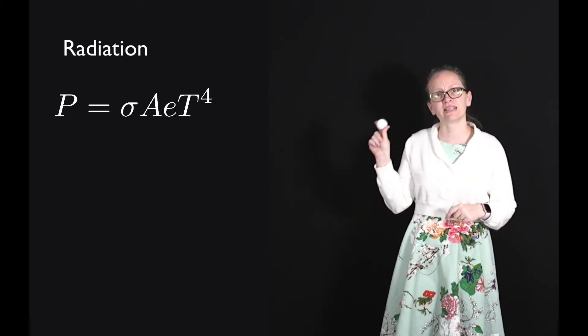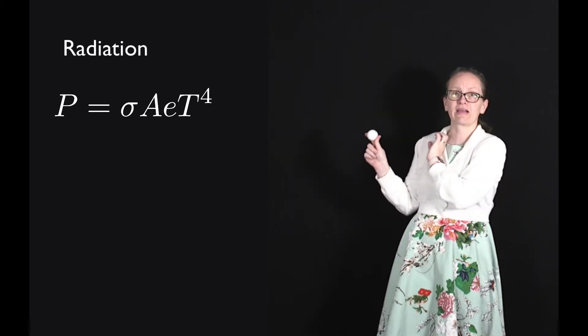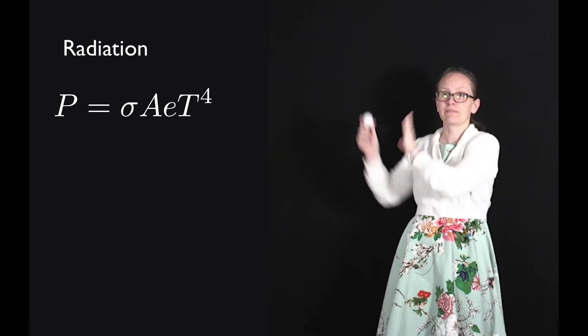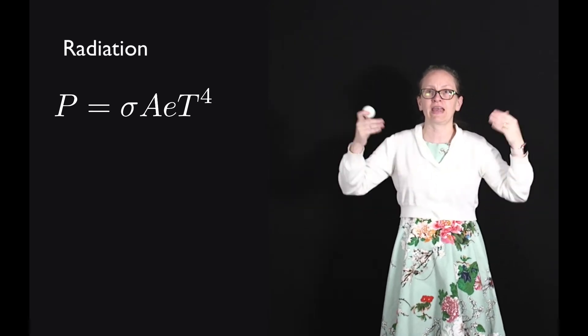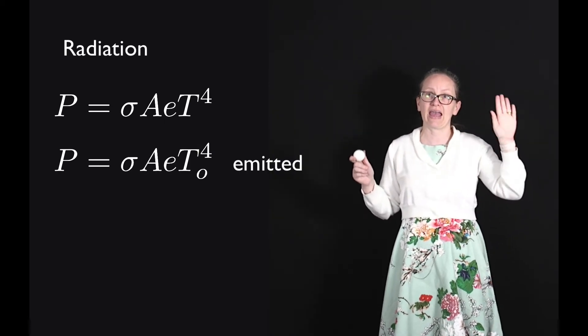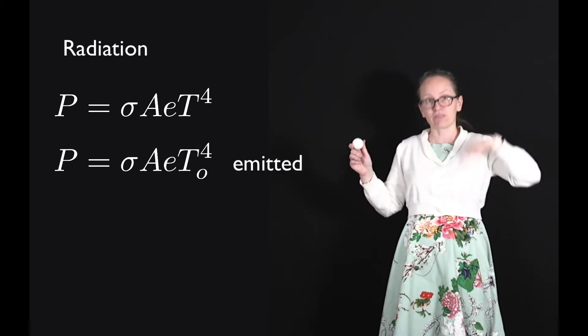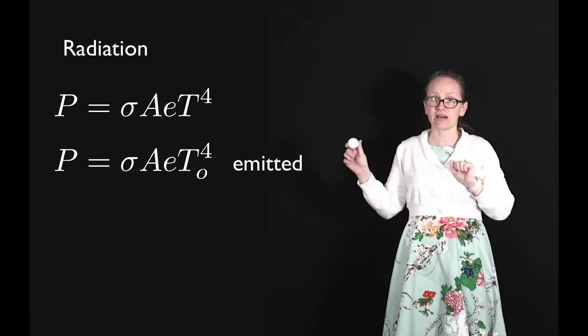When a body is sitting in a room, it's absorbing heat from the surroundings as well as emitting heat to the surroundings. The amount of heat emitted is given by P equals sigma A e T of the object to the 4. That's the temperature of the object itself.